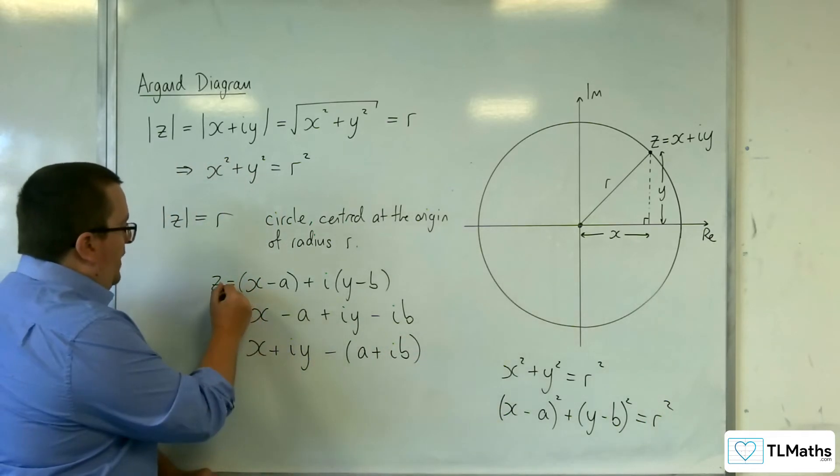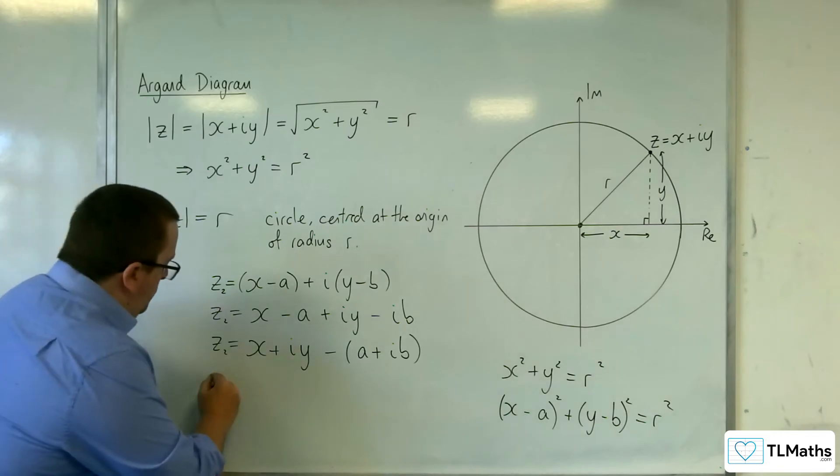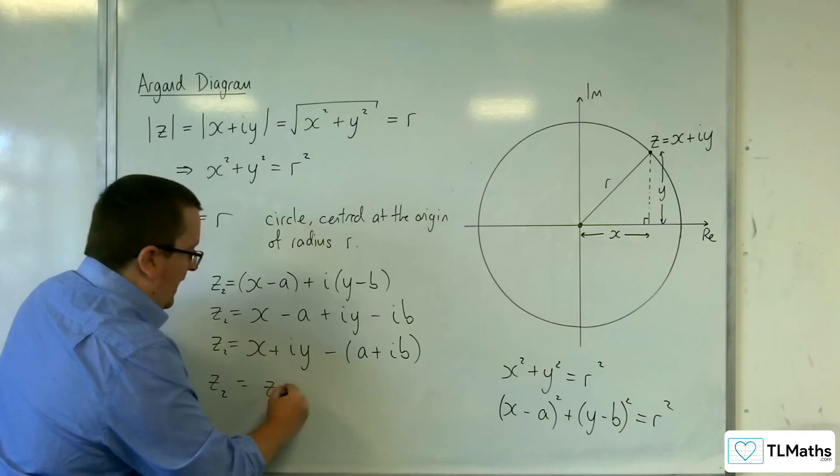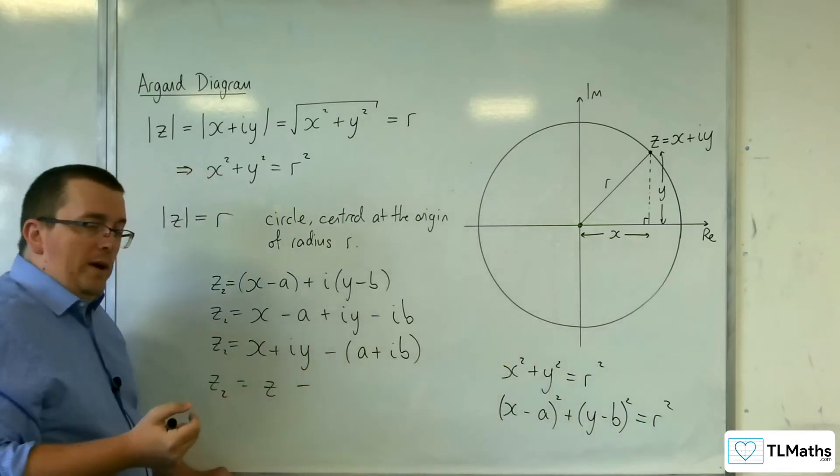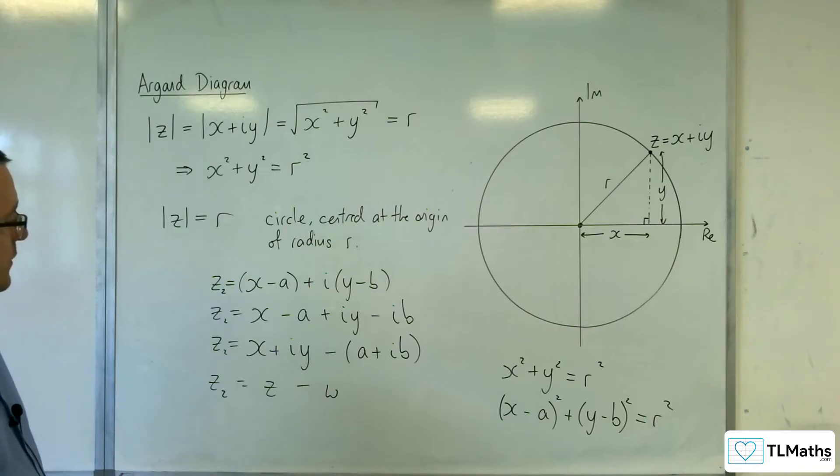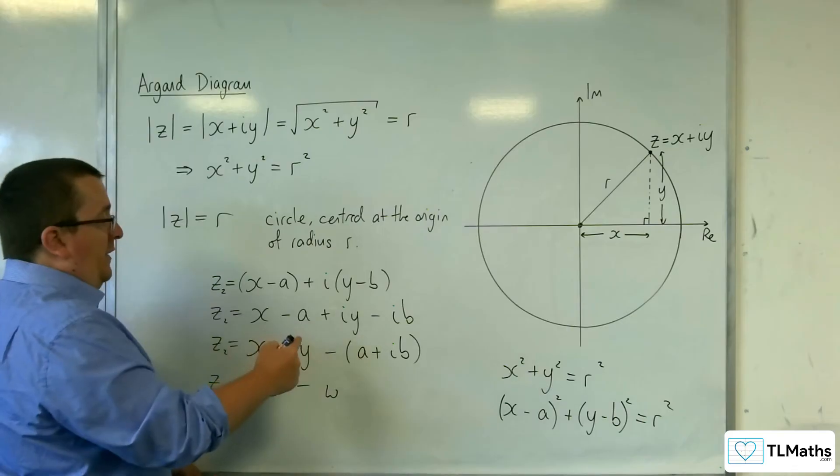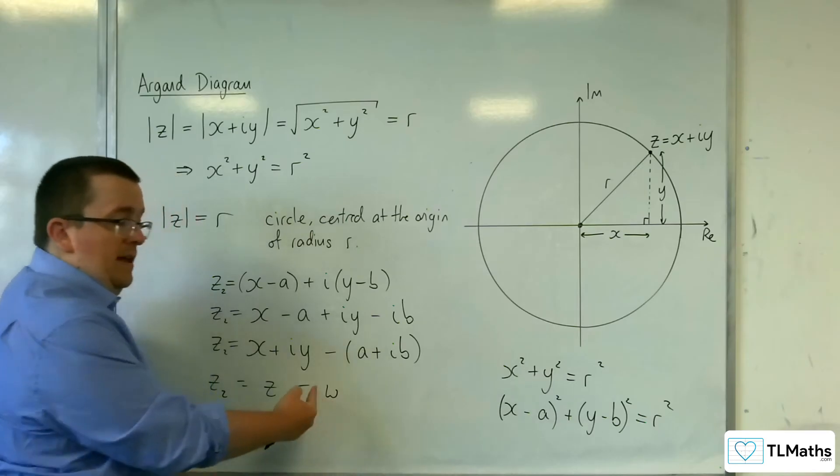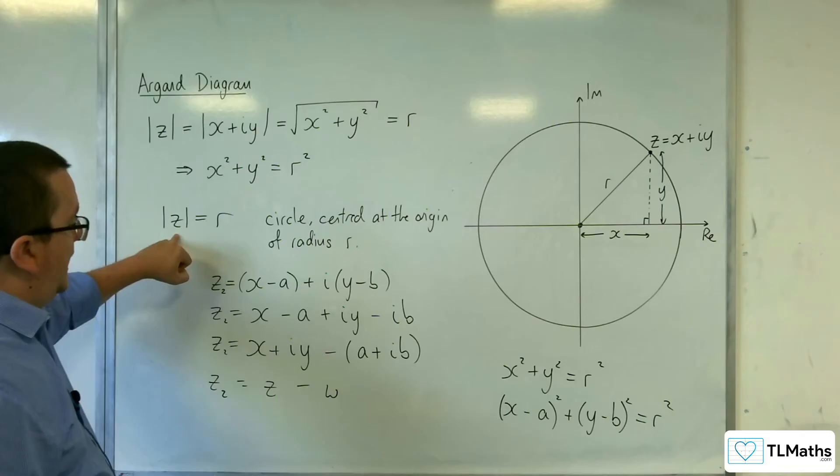So, let's call this z2 rather than rz. So, our new z is equal to the old one, the x plus iy, take away this one here. Let's call that w. So, now you can say, right, well, actually, if I want it centred at (a,b), or if I want it centred at this complex number here, w, then I can just replace the z in here with z take away w.